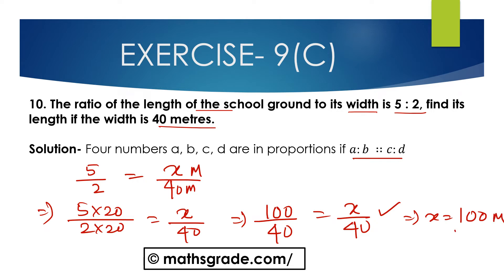X is 100 meters. So the length of the school ground is 100 meters. If the width is 40 meters, then the length of the school ground is 100 meters.